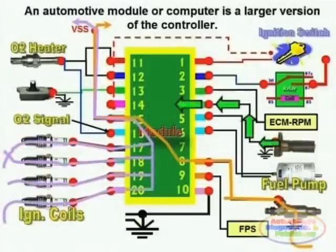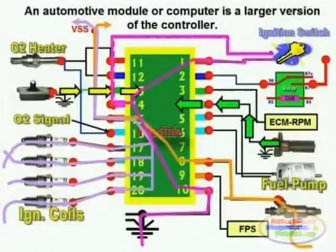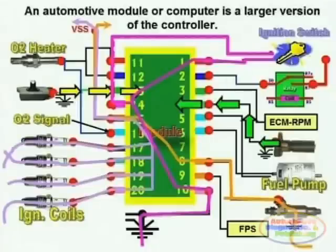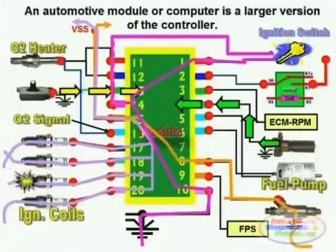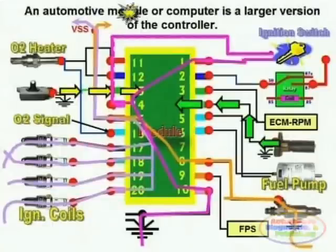Here we see the different current paths. For example, in purple, the current path that goes inside the module goes through the chassis ground, through the internal module circuitry, and up to the ignition switch. All these different current paths should be highlighted using a different color highlighter so the current path is visually detectable. It is much easier for the human brain to process visual information than numbers or simple lines drawn on paper.